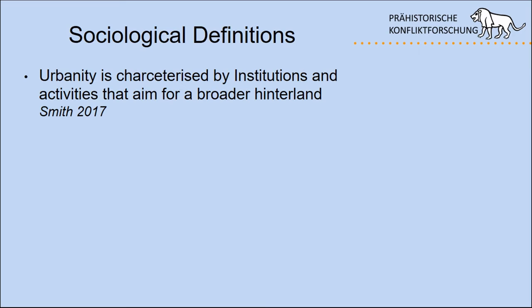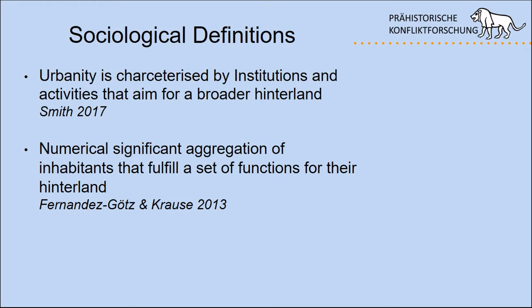Nowadays we have sociological definitions: urbanity is characterized by institutions and activities that aim for a broader hinterland. There's also another definition popular in Iron Age archaeology — a numerically significant aggregation of inhabitants fulfilling a set of functions for the hinterland. I tend towards the first one because numerical significance is problematic in prehistoric archaeology — how many people really inhabited the hillfort we don't know, since most have not been well excavated. Often only the wall is dated while the inner area has never been touched, or we have geomagnetic data showing postholes but no confirmed significant aggregation.